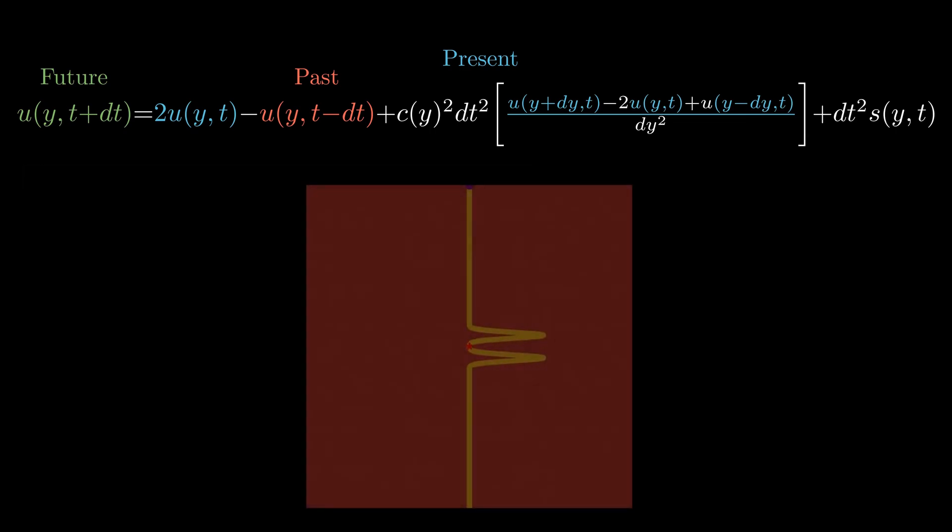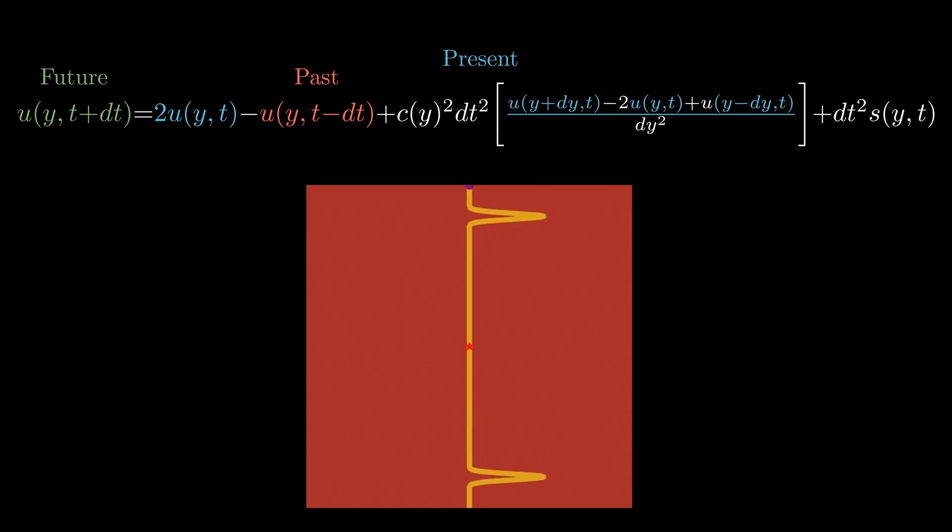Looking at the simulation for a very simple homogeneous domain, it ran fine. Source released the energy that generated the waves and it propagated through the medium as expected.